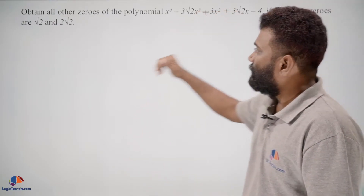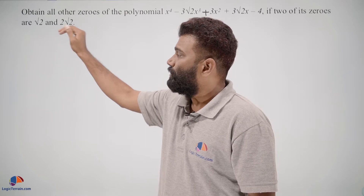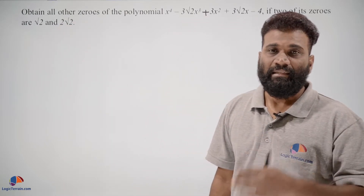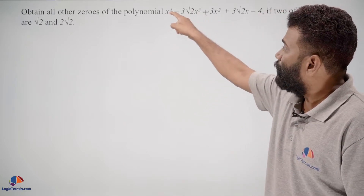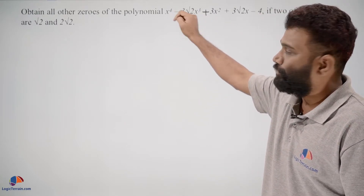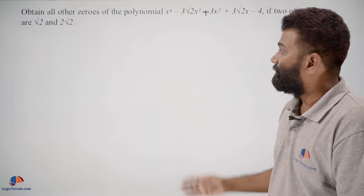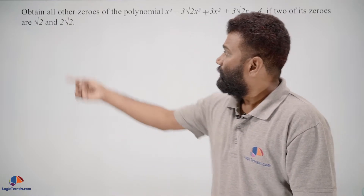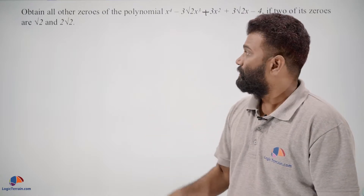For this polynomial, it is given that 2 of the zeros are square root 2 and 2 square root 2, and we need to find the remaining zeros. Since it is a 4th degree polynomial — you can see the highest degree is 4 — it will have 4 zeros. We already have 2 zeros, so we need to find the remaining 2 zeros.